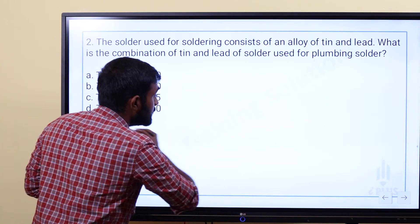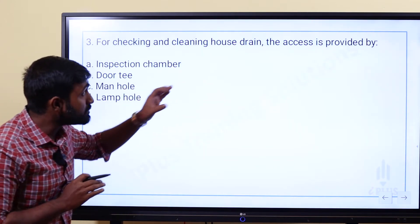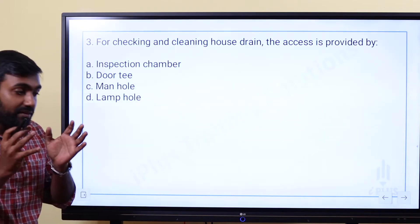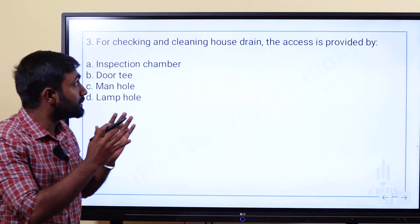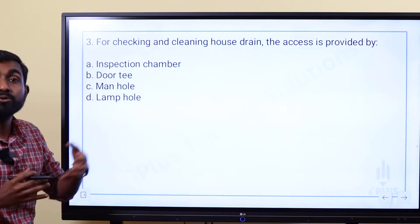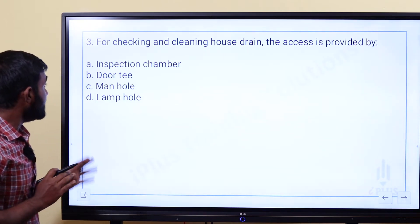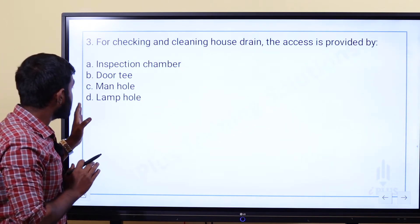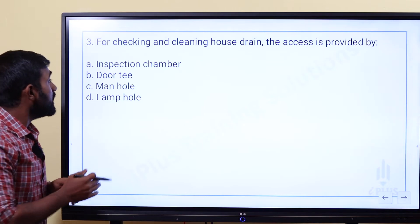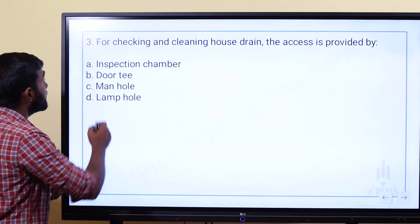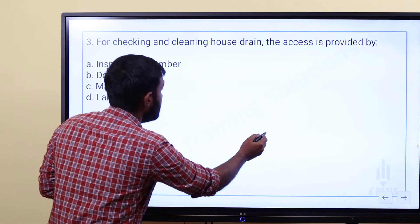Question 3: For checking and cleaning a house drain, access is provided by — the pipe comes into the house drain. The options are: Option A — inspection chamber, Option B — door T, Option C — manhole, Option D — lumberhole. For the house drain, we use the inspection chamber.